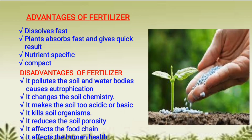Now, what are the advantages of fertilizers? First, they dissolve fast in water. Secondly, plants can absorb dissolved fertilizers quickly and they give fast results. Fertilizers are nutrient-specific — whatever kind of nutrient the soil needs can be easily supplied. For example, if the soil is nitrogen deficient, we can easily supply nitrate fertilizer to it. Fertilizers are compact and concentrated and come in packets.